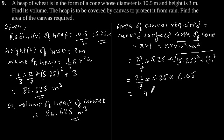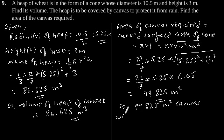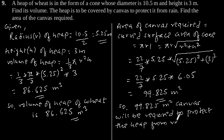So 99.825 square meters of canvas will be required to protect the heap from rain.